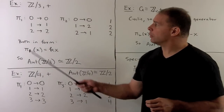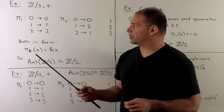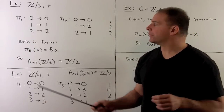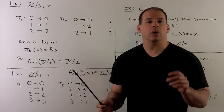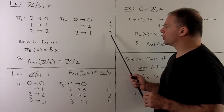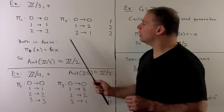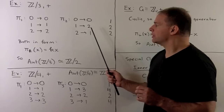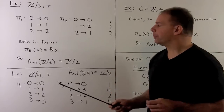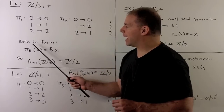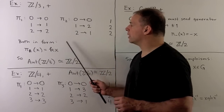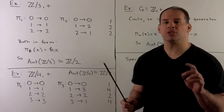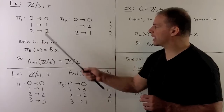For basic examples, we'll start with Z mod 3 under addition. Because we have a homomorphism, the identity element is carried to itself, so 0 goes to 0. We're left with two elements of order 2, so we can either leave them alone or switch. These are both homomorphisms, and we can write them in the form pi_k(x) = kx. For instance, applying pi_2 to 2: 2 times 2 is 4, subtract 3, we get 1.